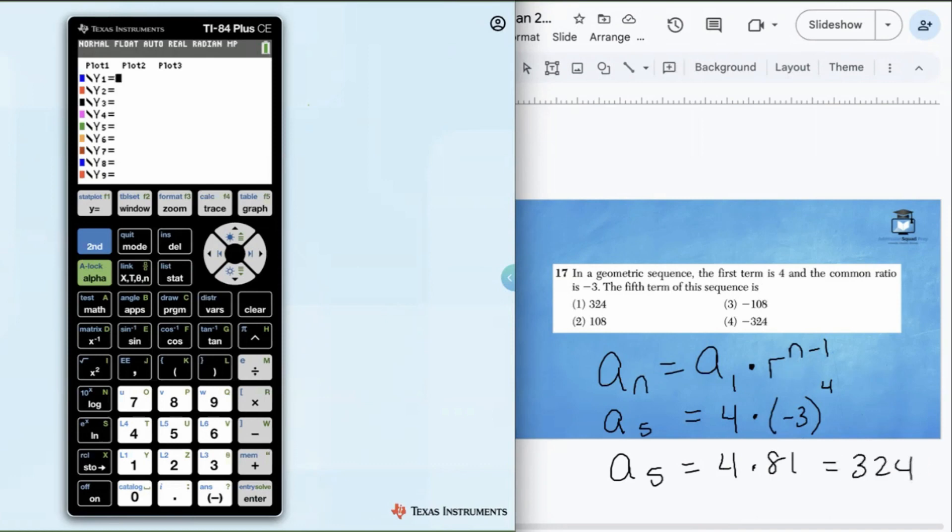But you could have also just put this exact function right here into the calculator. We will have 4, open parentheses, negative 3, close parentheses, to the fourth power. And our final answer should be 324. Let's see. And look at that. We do have that as the correct answer. So answer choice one is correct.